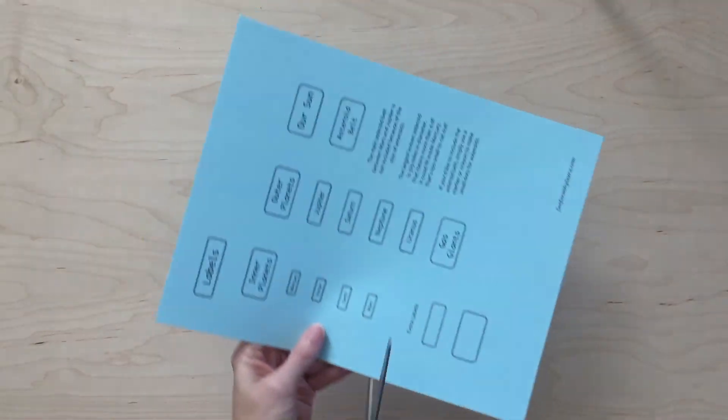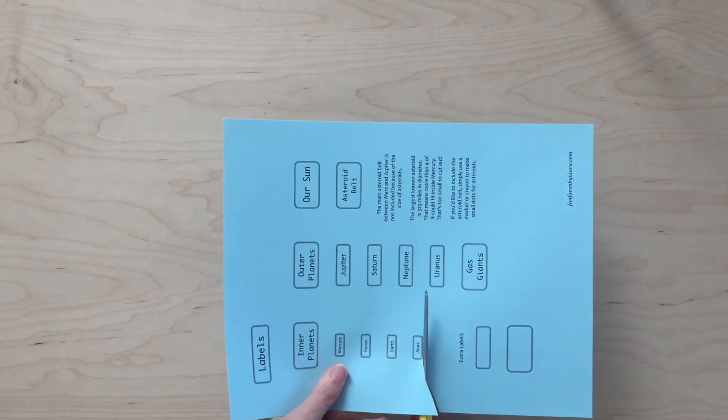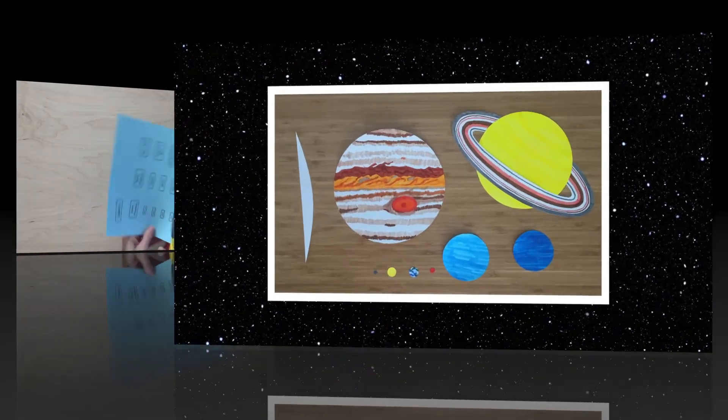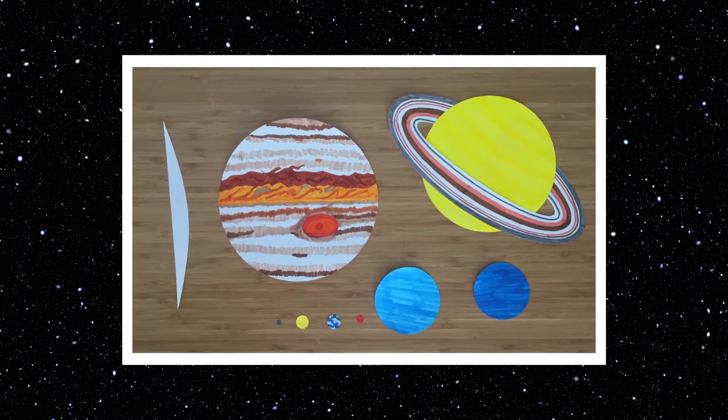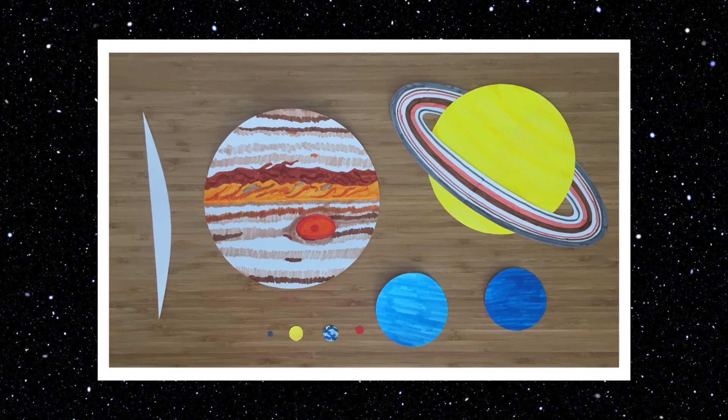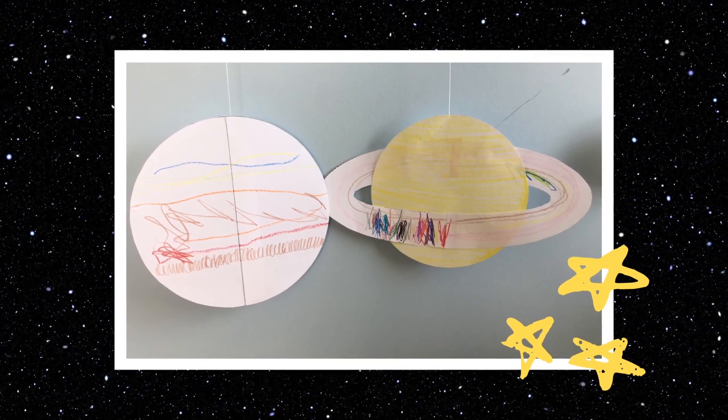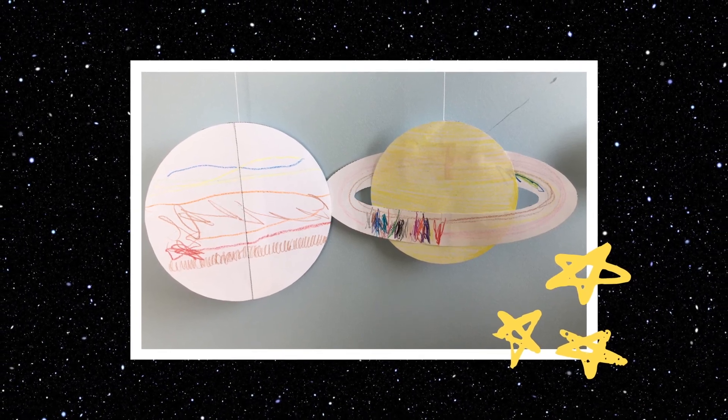If you would like to use the labels, just cut around the outside edges of them. Now that your planets are completed, check out my second planets video and pick a project to do with them. While you're at it, admire these planets colored by a pretty awesome two-year-old I know.